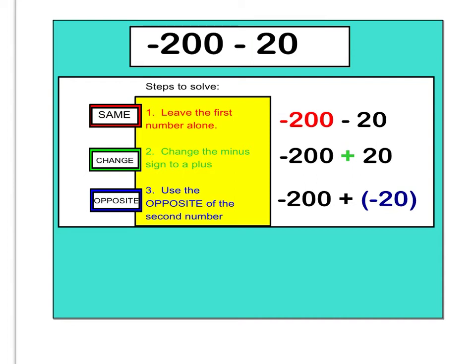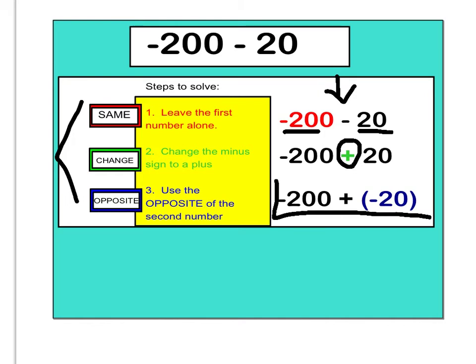So if I'm going to do that, you could do 3 steps listed right here. First, leave that first number alone. Then change the subtraction sign to an addition sign. And then take the opposite of the second number. So here, we leave negative 200 alone, change the sign to addition, and then take the opposite of 20, so you get negative 20. Negative 200 plus negative 20 is the same thing as negative 200 minus 20. It's just easier now because I can use my addition rules to solve it.